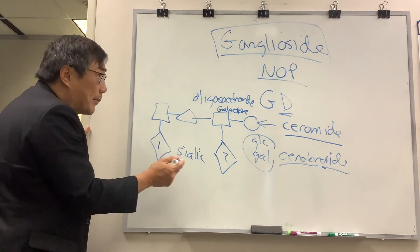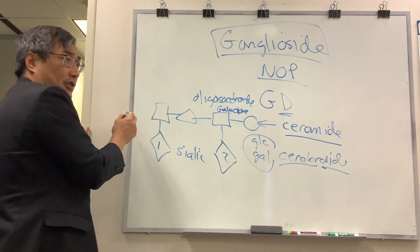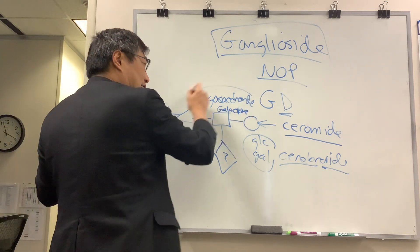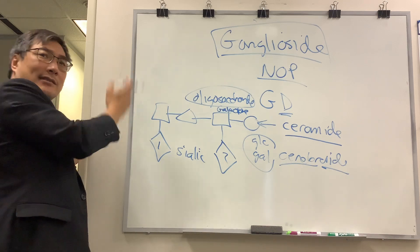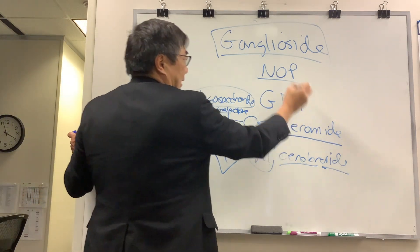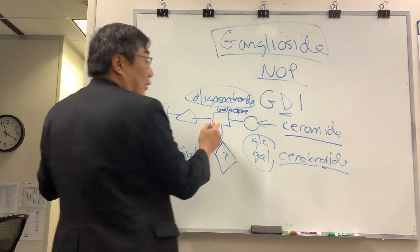And then the next number is the series of the sugar, which is the oligosaccharide sugar: glucose, galactose, galactose. So in this case, it's GD1.